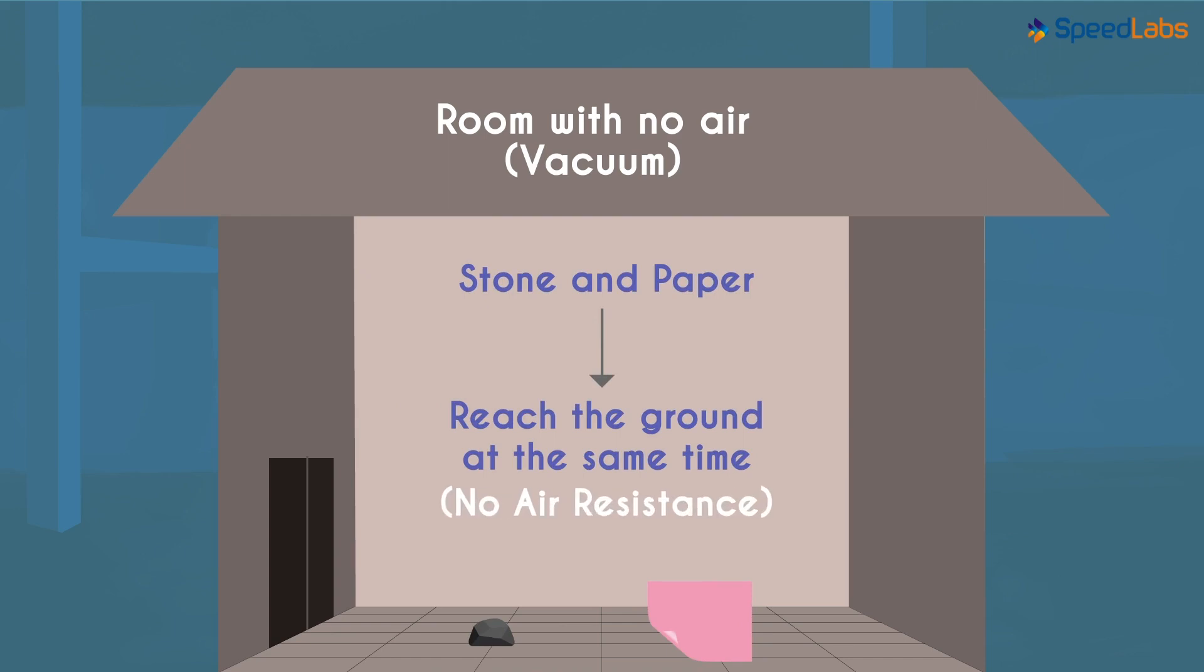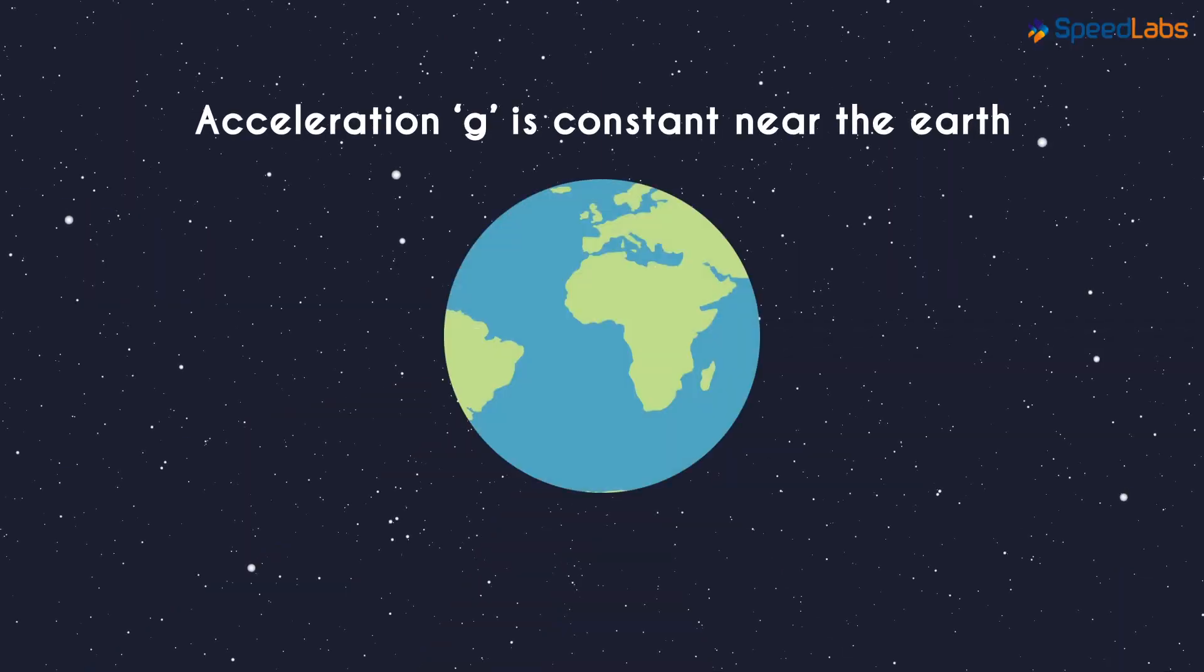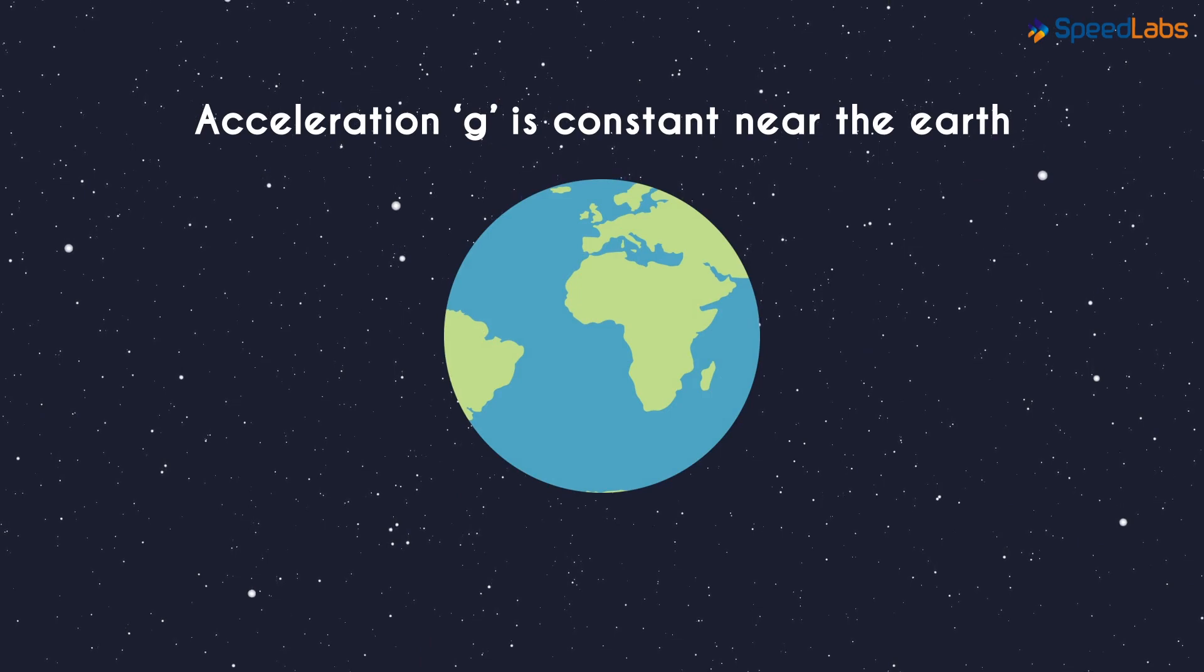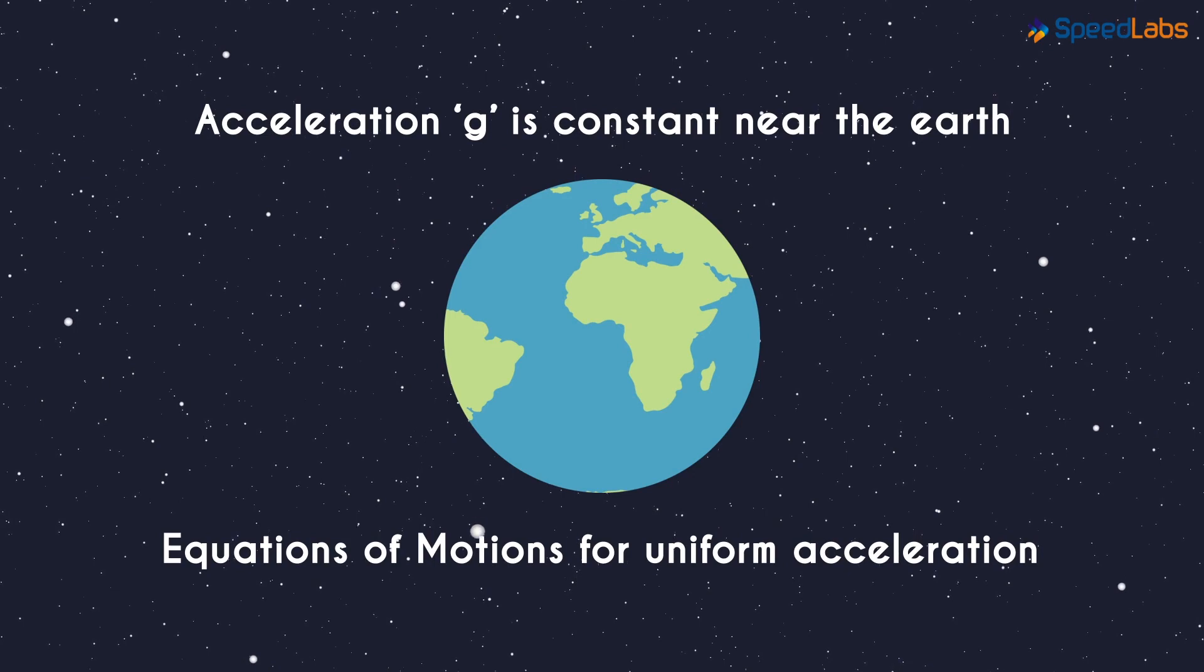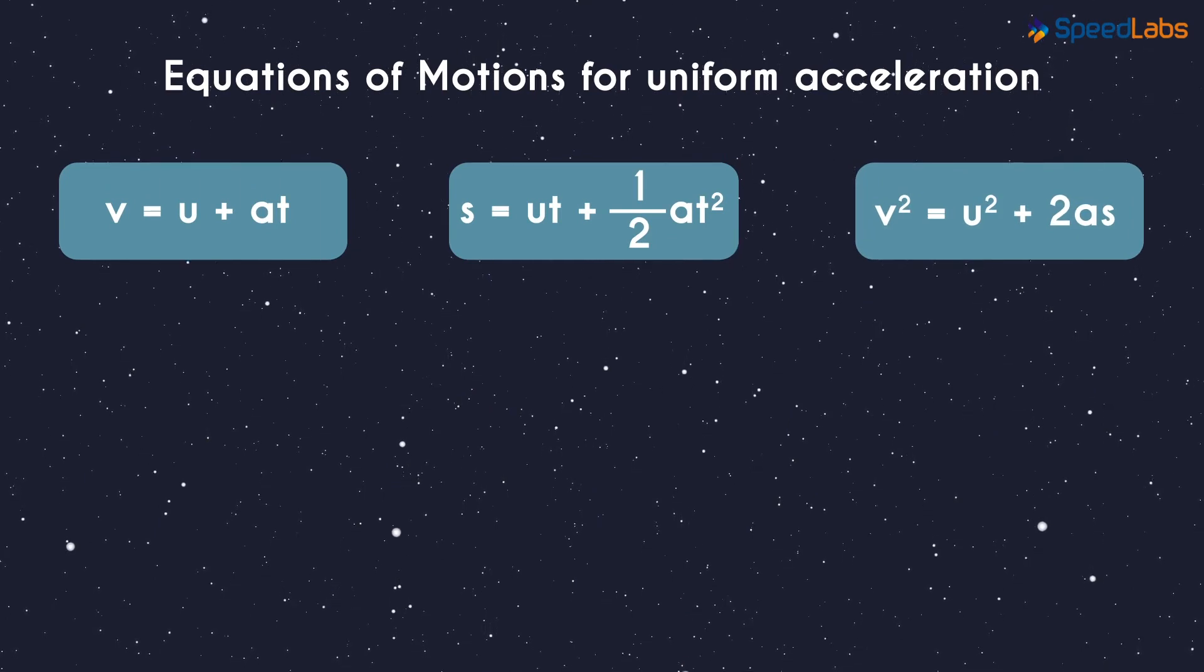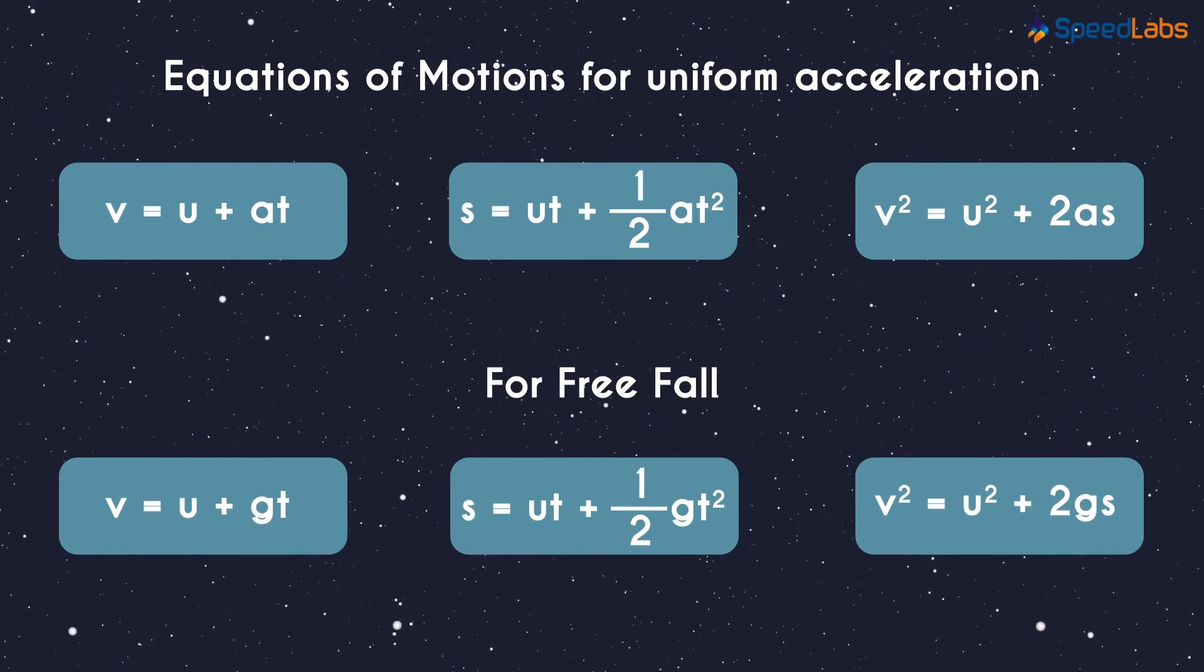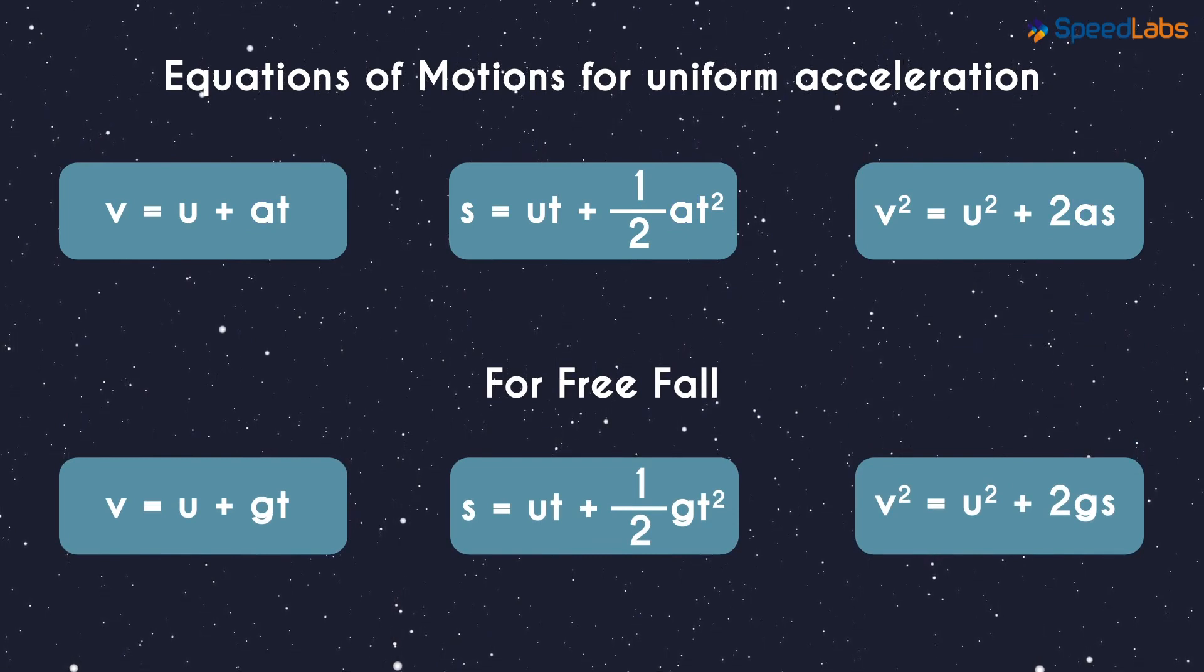So this was an important concept we learnt. Another thing we know is the acceleration g is constant near the earth. So this means that all the equations of motion we'd seen for uniform acceleration will be valid here. Do you remember the three equations of motion? Here they are. Here, a can be replaced with g. That's for free fall. In the next video, we will solve word problems related to these equations.